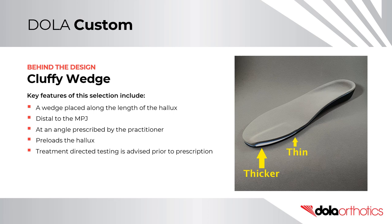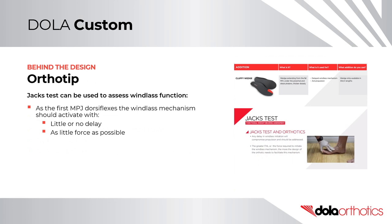The cluffy wedge is an EVA wedge placed along the length of the hallux at an angle prescribed by the practitioner. It will pre-load or pre-angle the hallux at the desired angle. Treatment-directed testing is advised prior to prescription. Ortho Tip – The JAX test can be used to assess windlass function. As the first MPJ dorsiflexes, the windlass mechanism should activate with little or no delay and with as little force as possible.